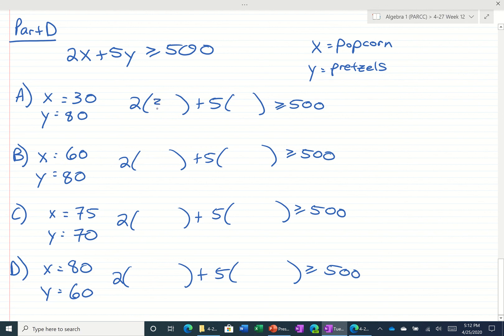Alright, so we have $30 and $80, $60 and $80, $75 and $70, and $80 and $60. Let's see which of these are true. So for the first one, $2 times $30 is $60. $60 plus $80 times $5 is $400. $460 is not greater than or equal to $500, so that's not an option.